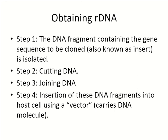Typical steps for obtaining recombinant DNA: Step one — the DNA fragment containing the gene sequence to be cloned, also known as the insert, must first be isolated from an entire DNA sequence. Step two — that sequence is cut out and joined to another strand of DNA. This involves insertion of the DNA fragment into the host cell, usually using a vector — something that can transfer the desired new DNA sequence into the host.